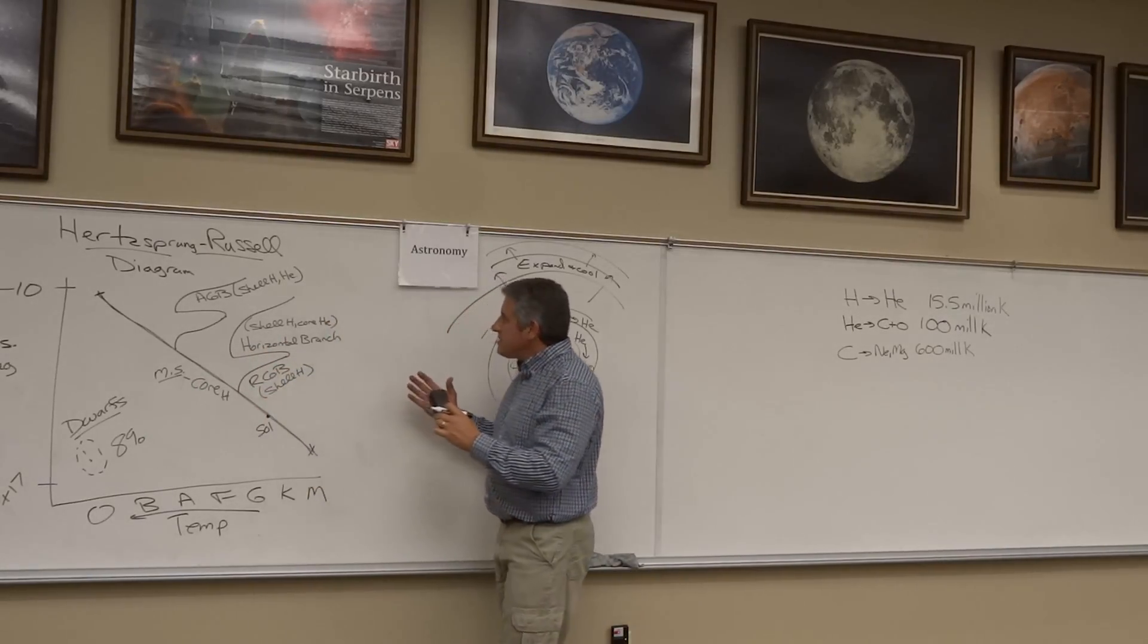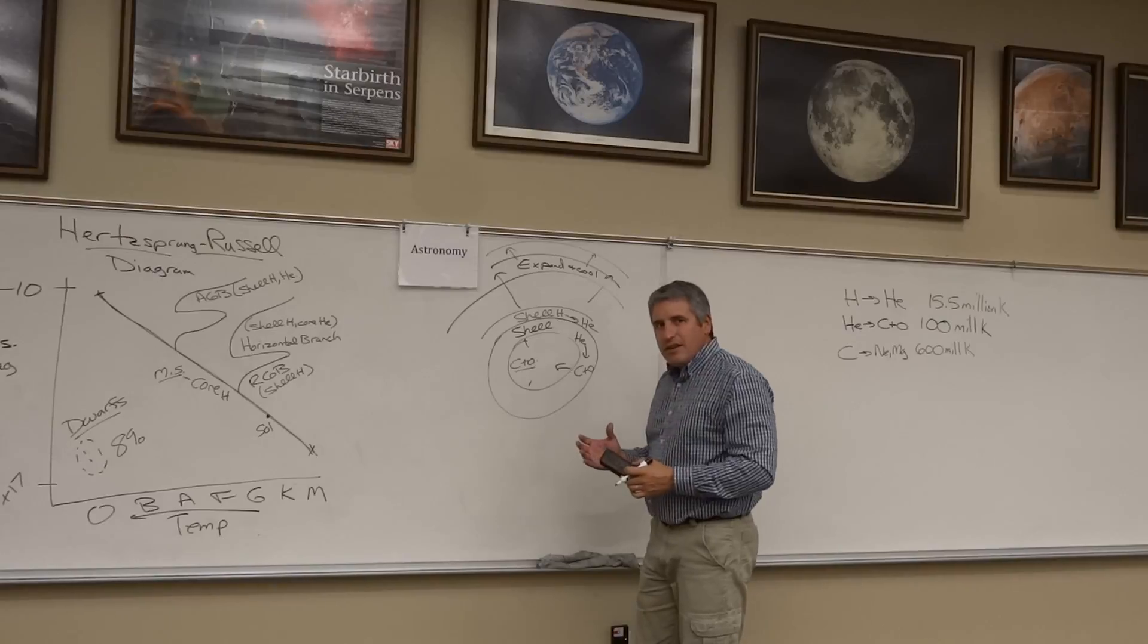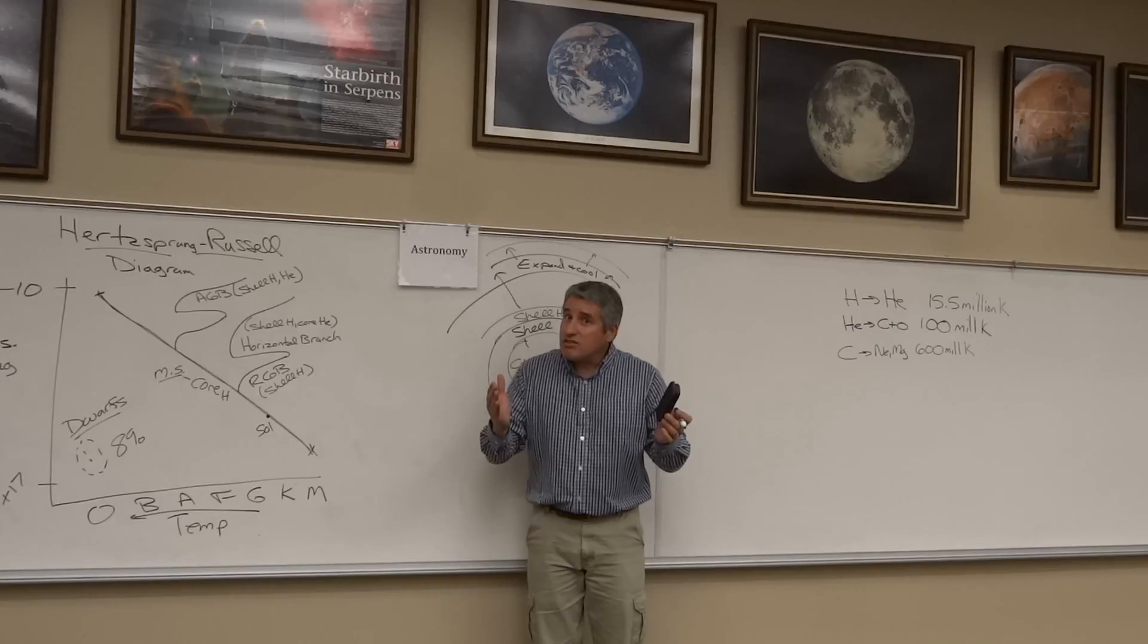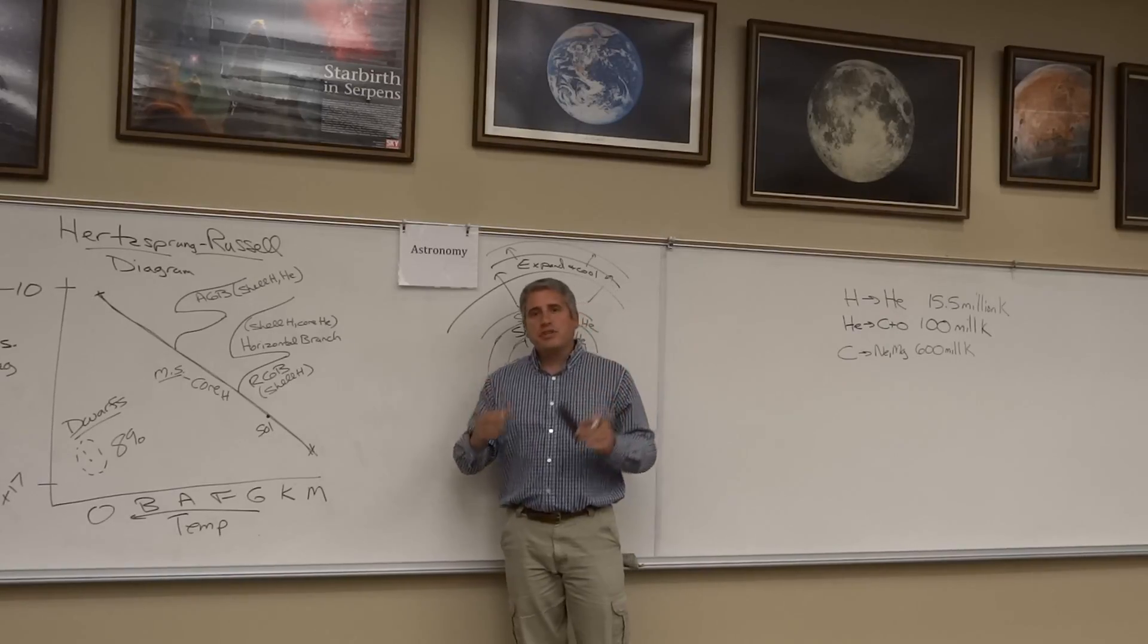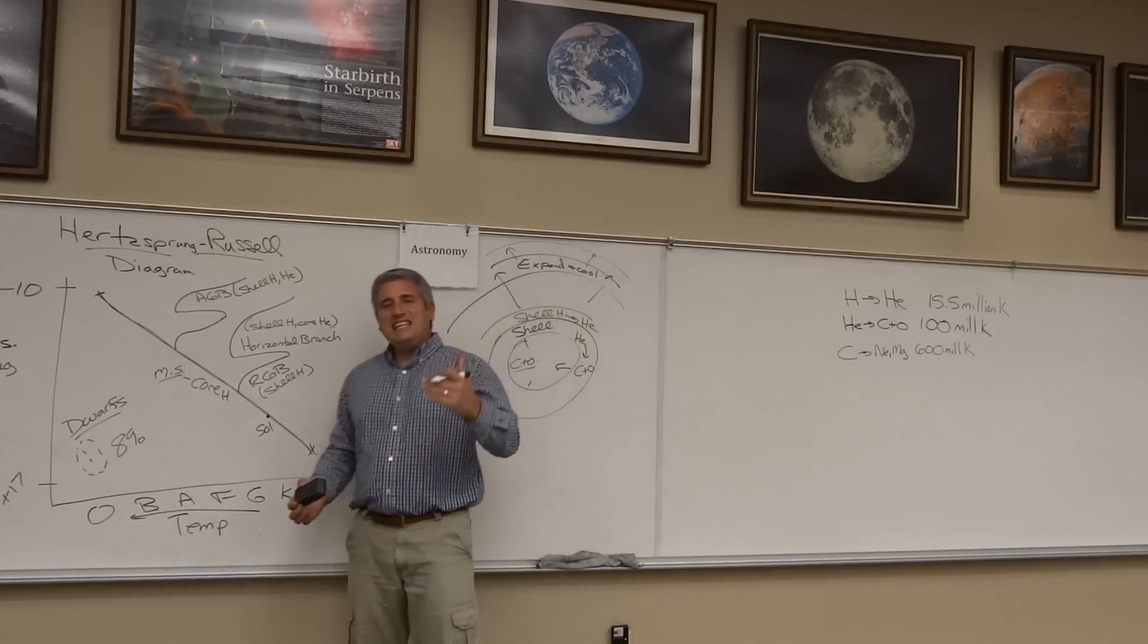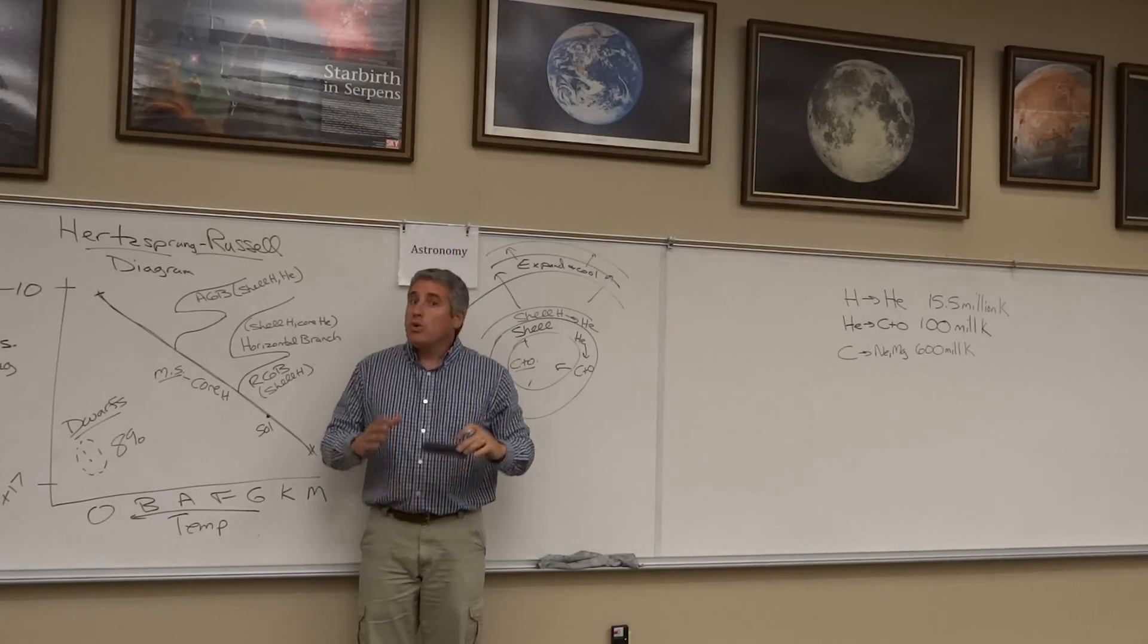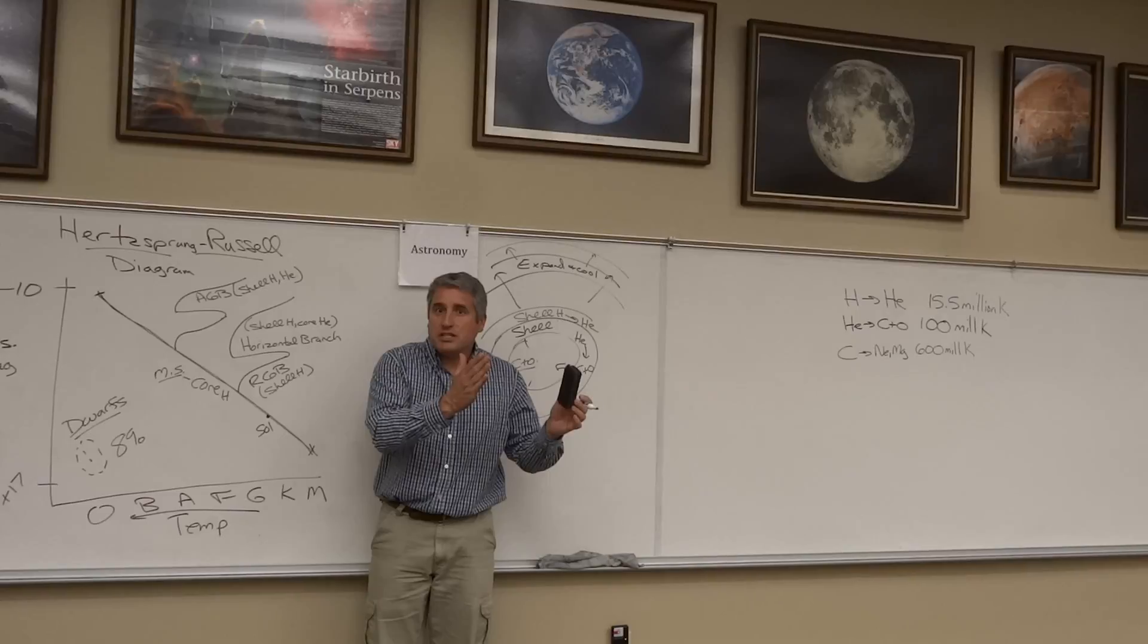The problem is, where does it end? Can we burn carbon and oxygen in the core? It turns out for small stars like our sun, that is a bridge too far. In fact, any star that is less than eight times the mass of the sun will never burn carbon and oxygen in its core.